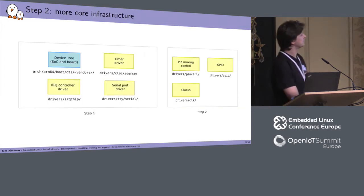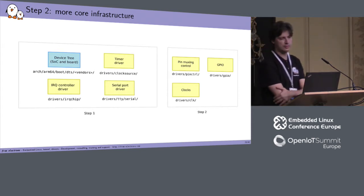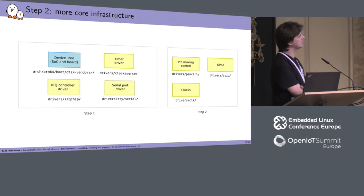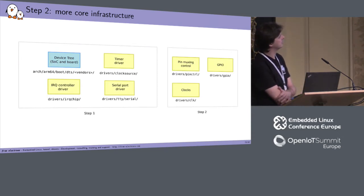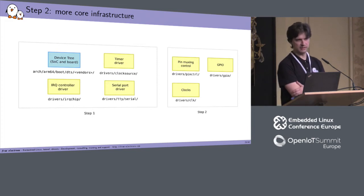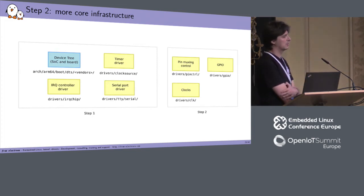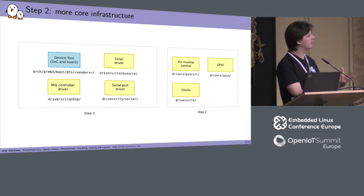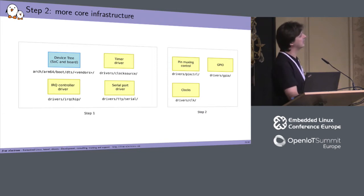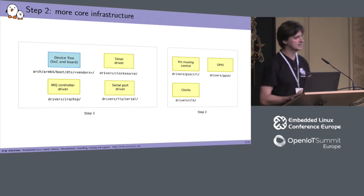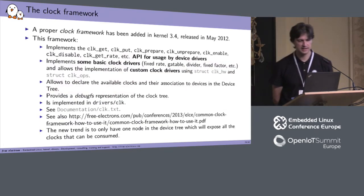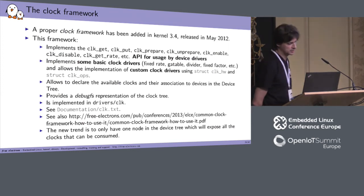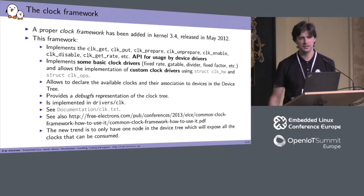Step two is adding infrastructure for your SoC: the pin muxing, the GPIO, and the clocks. Because until now, it's running but you're really relying on what has been done in the bootloader — the bootloader has started the clocks and set up the pin mux for you. As soon as you want to change something or go back from suspend, you will need a better infrastructure. The clock framework was added in 3.4. This framework implements clock gate, clock divider, and so on — the IP usage for the device driver.